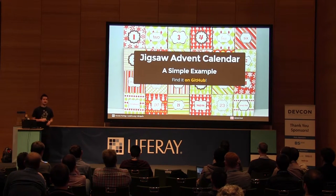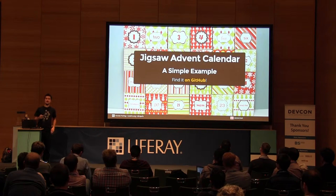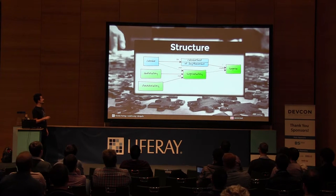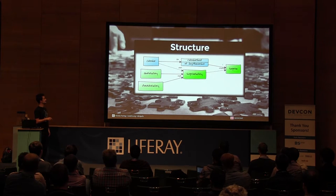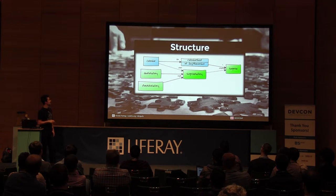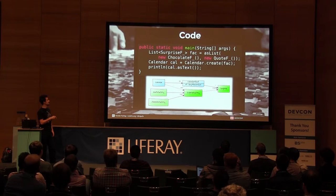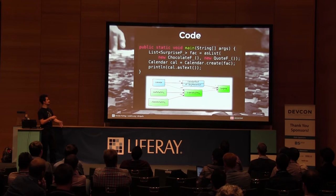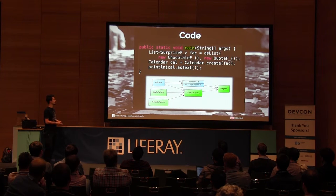Let's start with a very simple example. This is an advent calendar: a calendar has 24 calendar sheets, each sheet has a surprise. There's a Surprise interface, a SurpriseFactory interface that creates surprises, and two simple factory implementations. The main method binds it all together — it creates a list of the two factories, creates a calendar, gives it the list, and the calendar creates itself, turns itself into text, and is printed. Very simple.